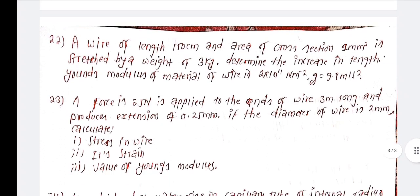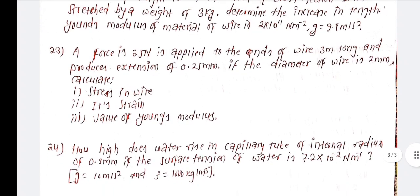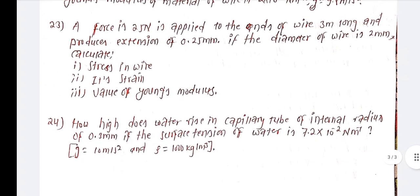A push of 25 Newton is applied to a wire 3 meters long and produces an extension. If the diameter of the wire is 2 mm, calculate the strain and Young's modulus of the material.